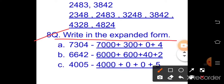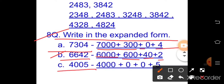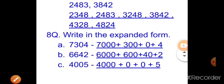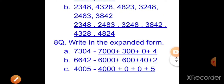Question eight answers — write in expanded form. Part a: 7304 = 7000 + 300 + 0 + 4. Part b: 6642 = 6000 + 600 + 40 + 2. Part c: 4005 = 4000 + 0 + 0 + 5. Practice these sums at home properly. Have a nice day, take care, bye bye.